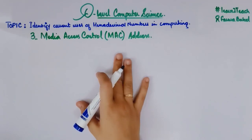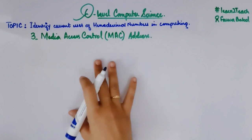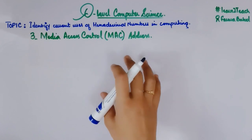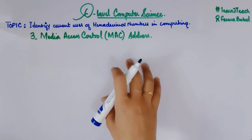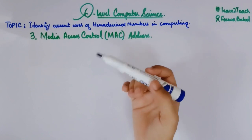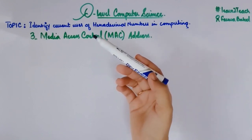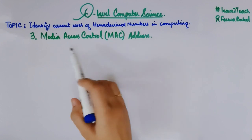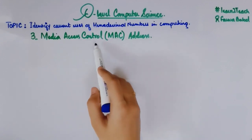Hello everyone, this is your instructor Farwa Batool and welcome to the course of O Level Computer Science. We are looking at the uses of hexadecimal numbers in computing. Up till now we have seen two uses — color codes and memory dumps — and in this video we are going to look at the Media Access Control, or the MAC address.